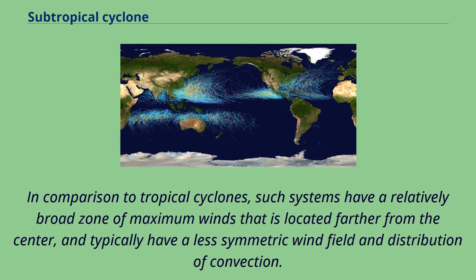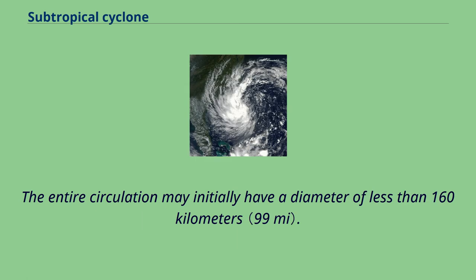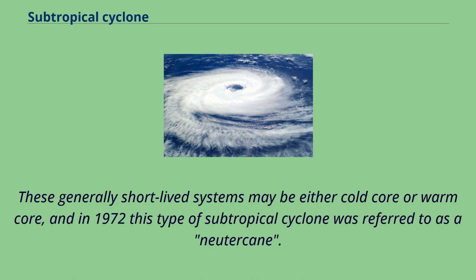In comparison to tropical cyclones, such systems have a relatively broad zone of maximum winds located farther from the center, and typically have a less symmetric wind field and distribution of convection. A second type of subtropical cyclone is a mesoscale low originating in or near a frontalizing zone of horizontal wind shear, also known as a dying frontal zone, with a radius of maximum sustained winds generally less than 50 km. The entire circulation may initially have a diameter of less than 160 km. These generally short-lived systems may be either cold core or warm core, and in 1972 this type of subtropical cyclone was referred to as a neutercane.